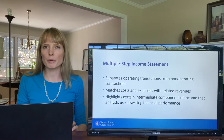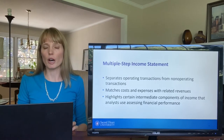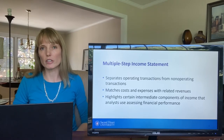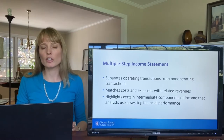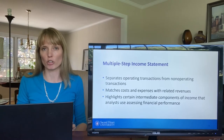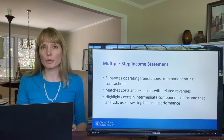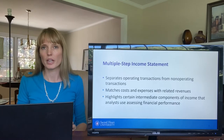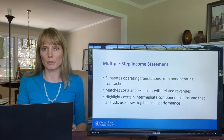The multiple-step income statement takes the view that certain business elements are more important because they're related to a company's primary operations — the main reason a company is in business. It separates out and places less importance on those activities, revenues, or expenses that are not stemming from the company's primary operations.